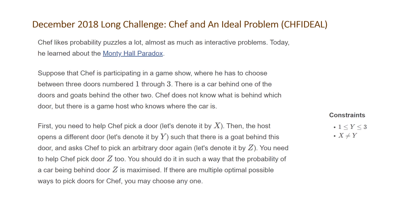First you need to help Chef pick a door — let's denote it by X. Then the host opens a different door, let's denote it by Y, such that there is a goat behind this door, and asks Chef to pick an arbitrary door again, let's denote it by Z. You need to help Chef pick door Z too, in a way such that the probability of a car being behind door Z is maximized.